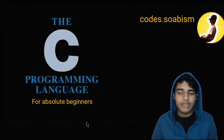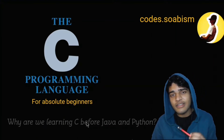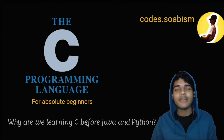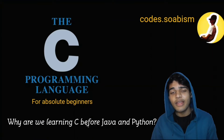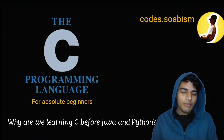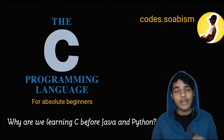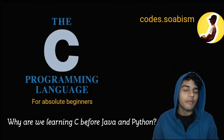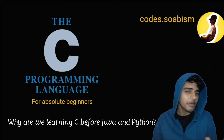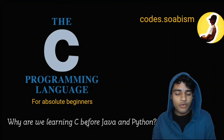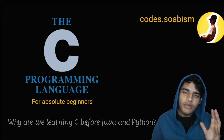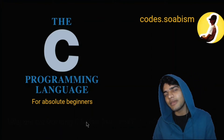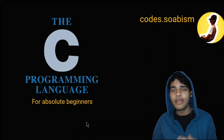The other thing we'll talk about is why you should learn C language rather than Java or Python. Python and Java are strong, modern languages, but C programming is very old. The operating systems we use today were built using C programming, so to understand the development history of programming, you have to see how C language started.